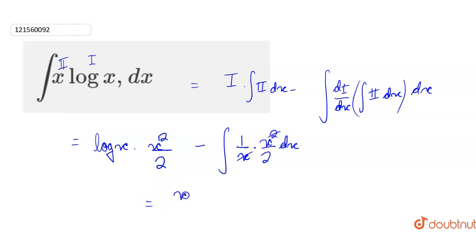So what is the answer? x²·log(x) by 2, minus. Now what is left? x/2 dx.